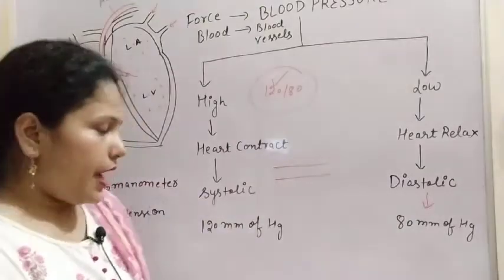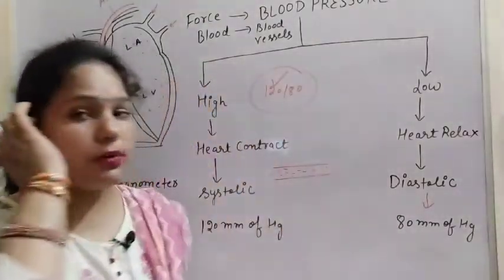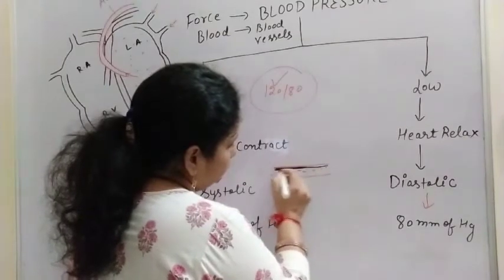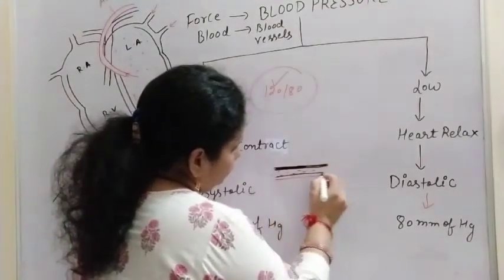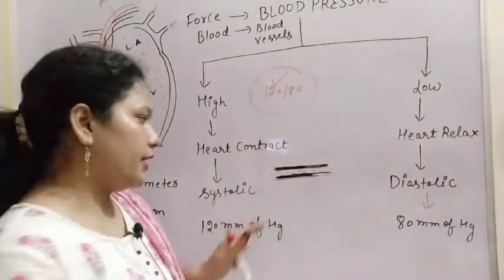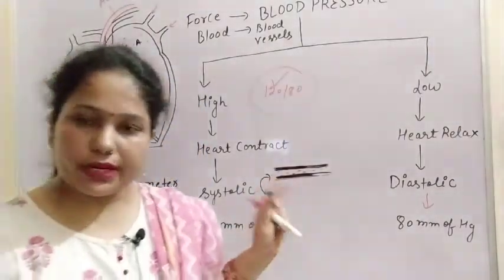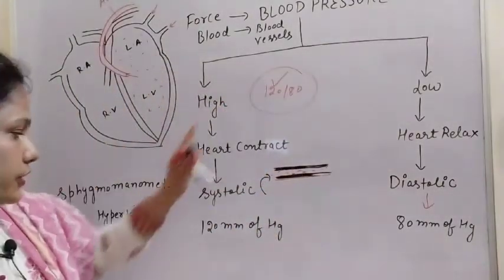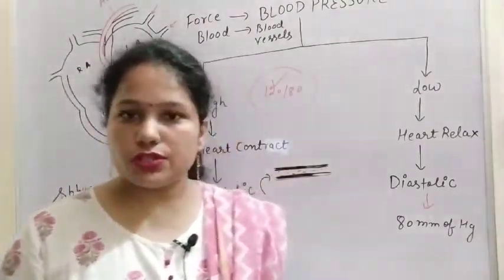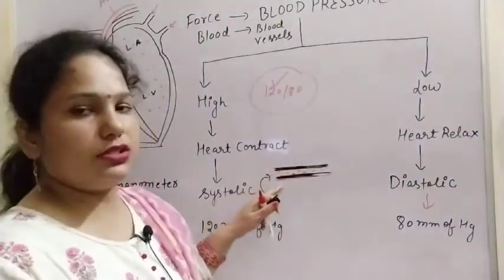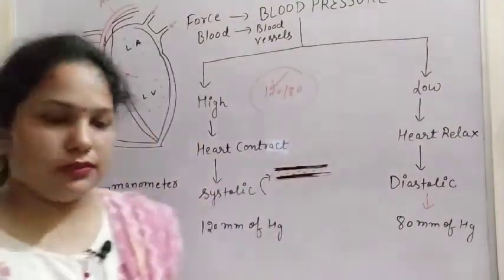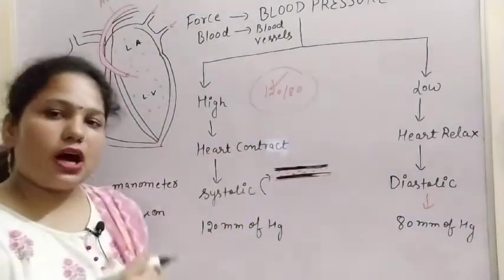Suppose that is the artery and blood is flowing in the artery with a pressure. But if something is deposited inside the arteries — like cholesterol — so what happens now? Blood pressure increases because this area becomes very narrow. So what will happen? There may be the rupturing of the blood vessels. So due to high blood pressure, there may be the disease hypertension, and hypertension is because of high blood pressure in the arteries.